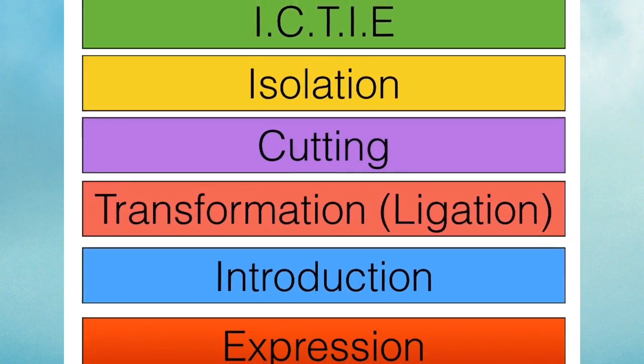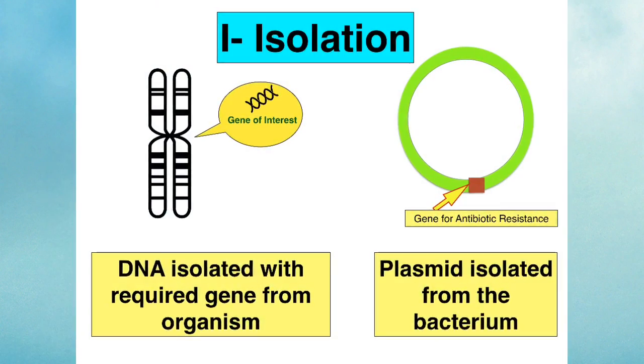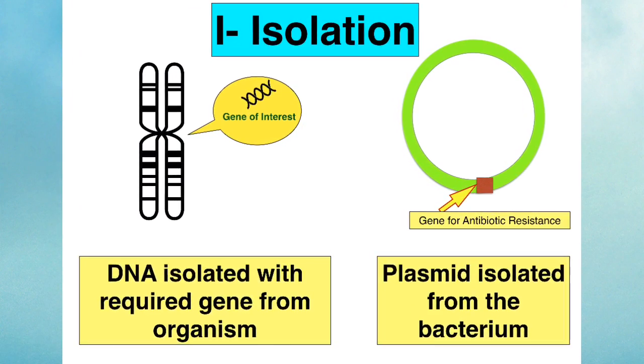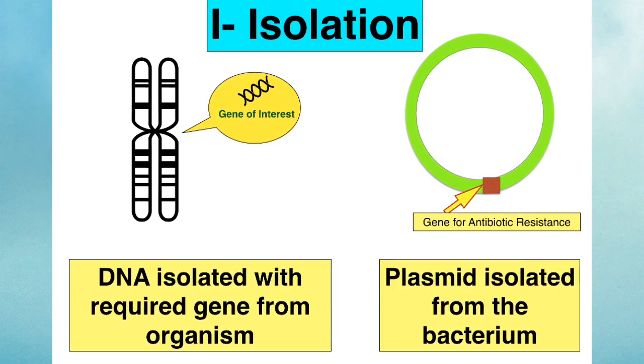So let's go through each of the steps, the ICTIE. Step one is isolation. The DNA containing the target gene is removed from the organism, as is the plasmid from the bacterium.